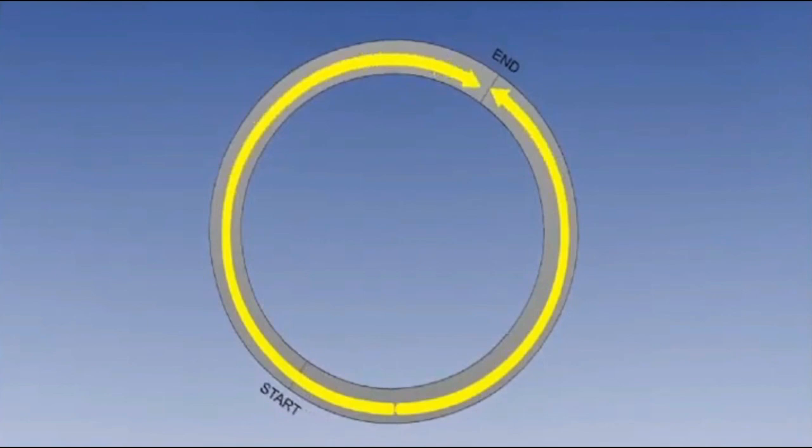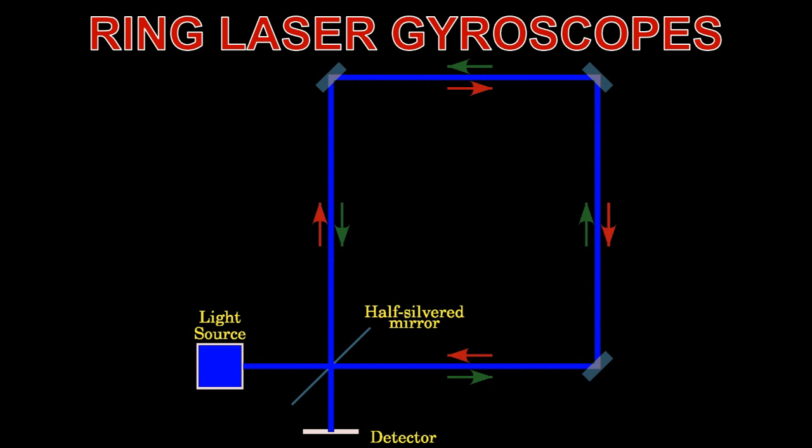This is complex physics, which won't be explained here. But don't worry, the theory is not important. What is worth noting is that the device, unlike a mechanical gyroscope, has no moving parts, and is less susceptible to bias errors.